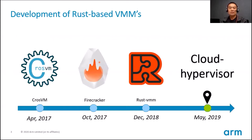The first well-known virtual machine monitor written in Rust is CrosVM. It was published in April 2017 by Google. CrosVM is based on KVM and is designed to run on Chrome OS. Later, in October the same year, the Firecracker project started.